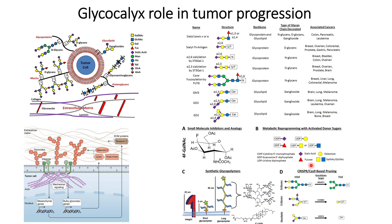The fourth approach is CRISPR-Cas9-based editing. We can knock out genes responsible for post-translational modifications: for example, MGAT1 knockout reduces sialic acid formation; COSMC also helps reduce sialic acid formation; and UGCG knockout decreases galactose structure formation. In this way, glycocalyx bulk and thickness are reduced, allowing immune cells to interact with tumor cells and trigger apoptosis or cytotoxicity to kill them.